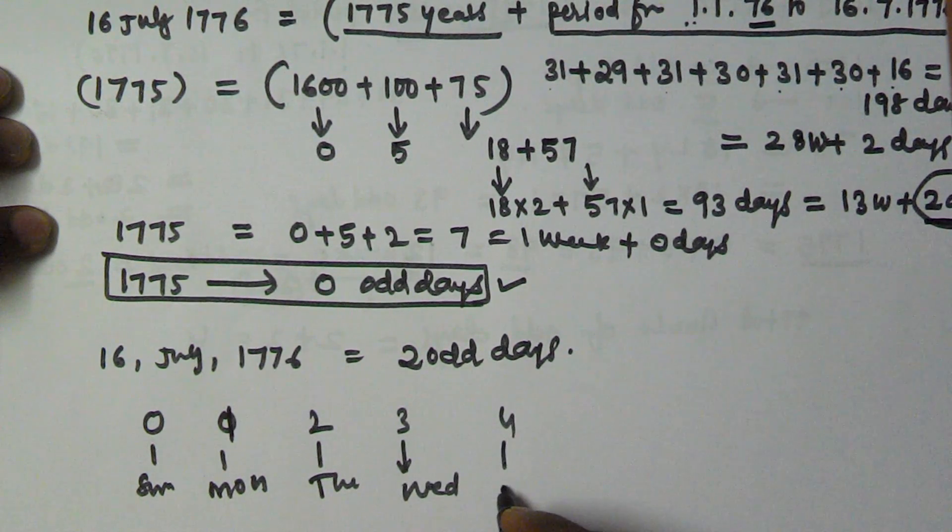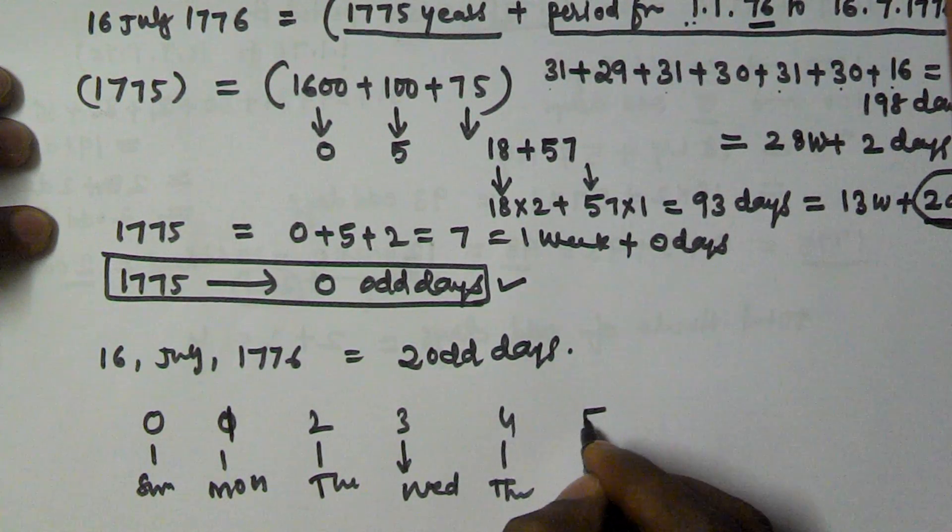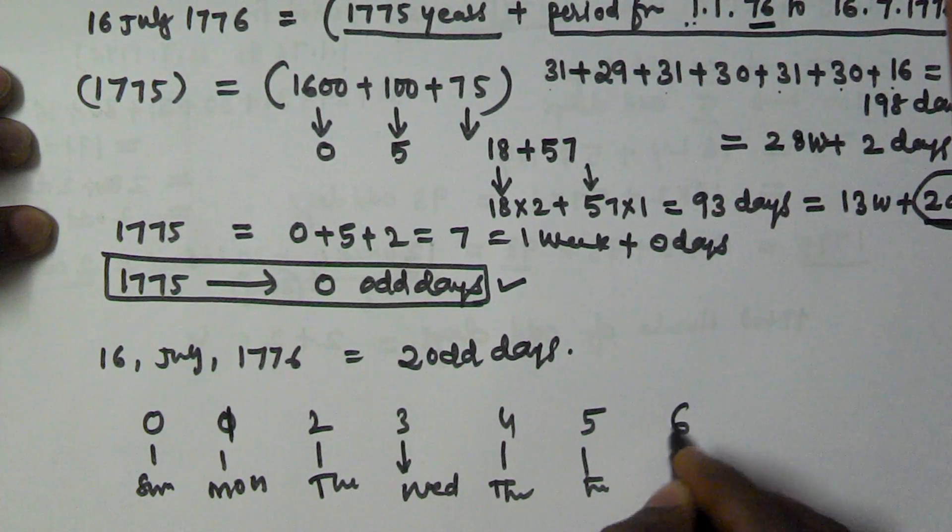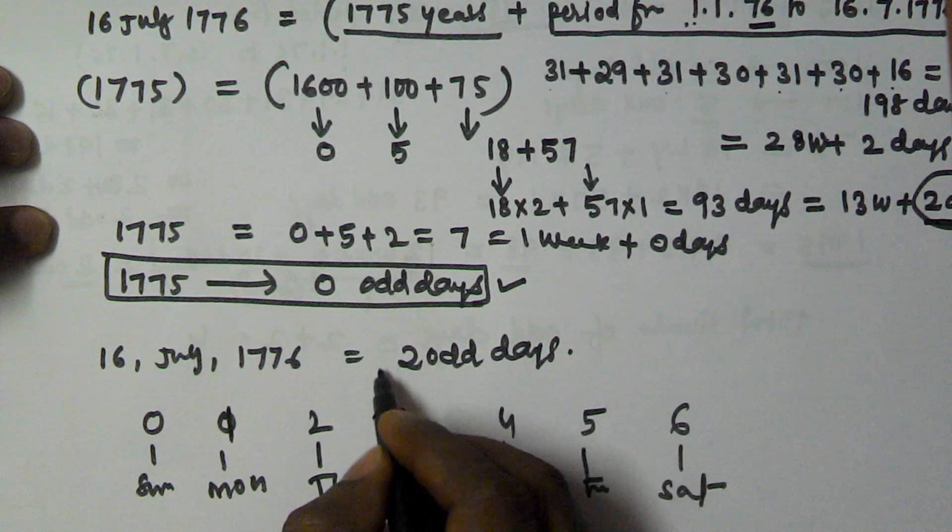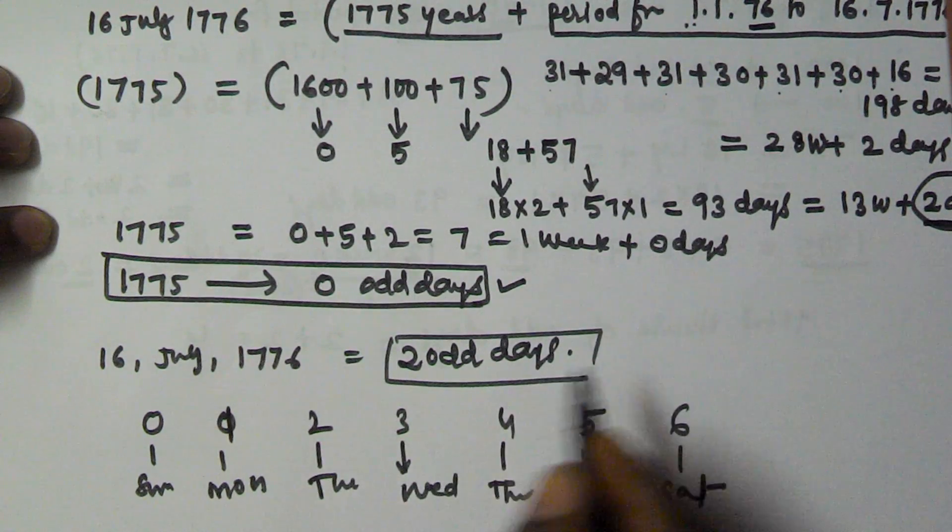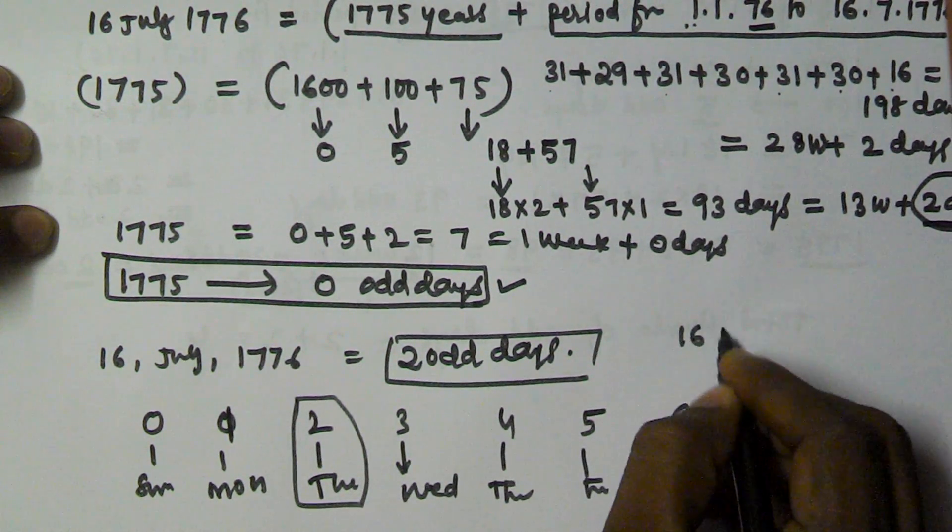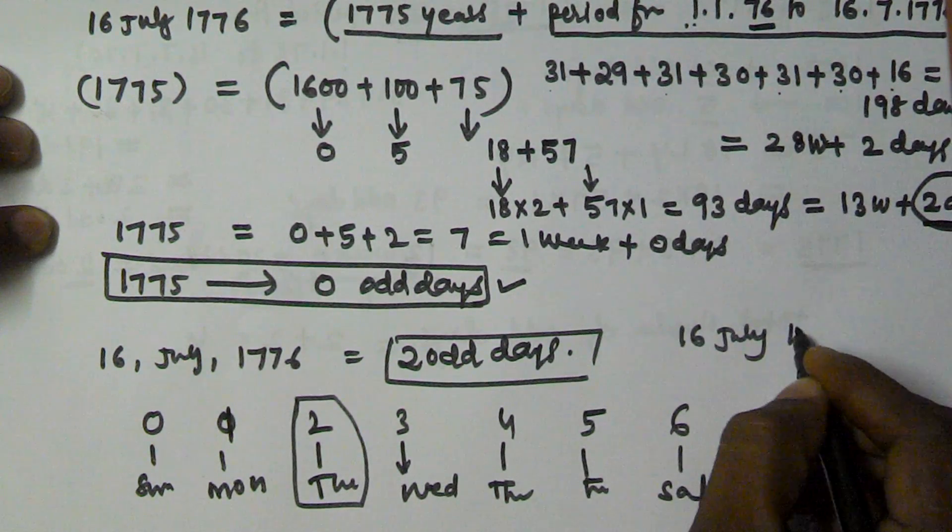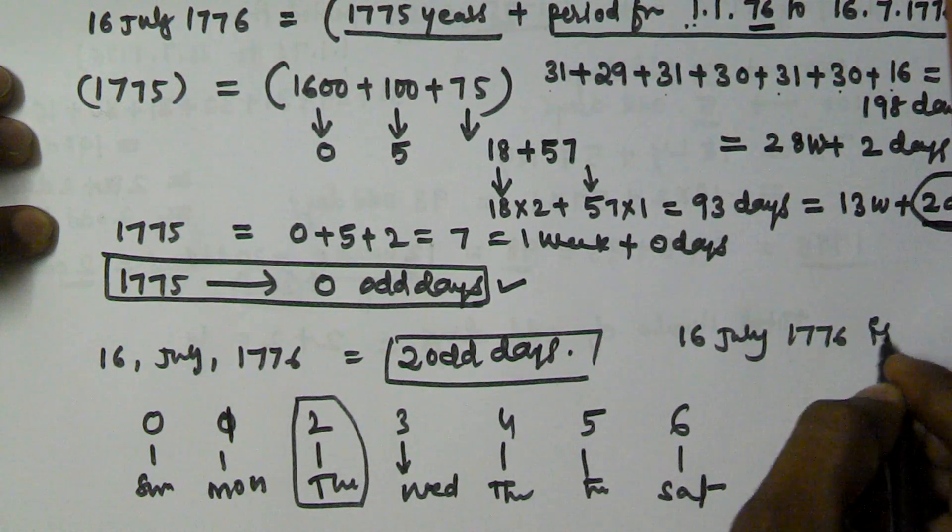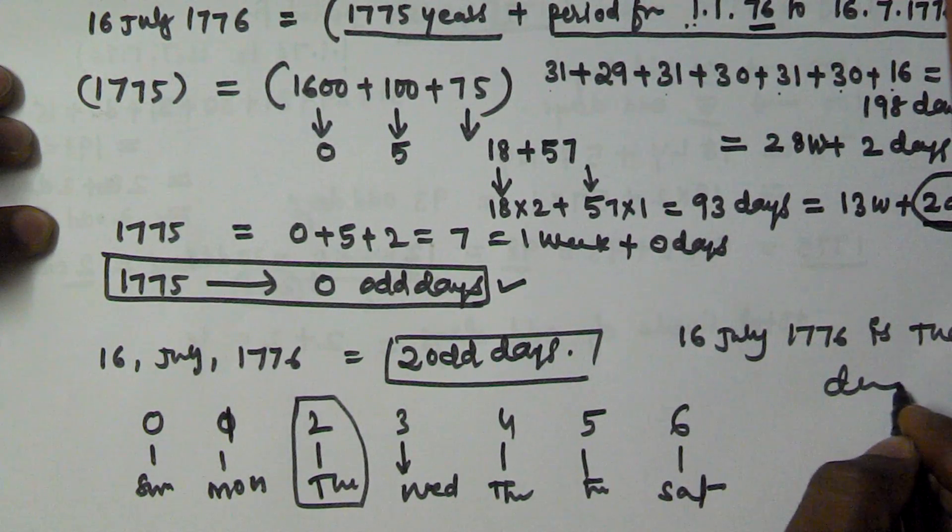4 means Thursday, 5 means Friday, 6 means Saturday. We got 2 odd days, that means 2 corresponding to Tuesday. So 16th July 1776 is a Tuesday.